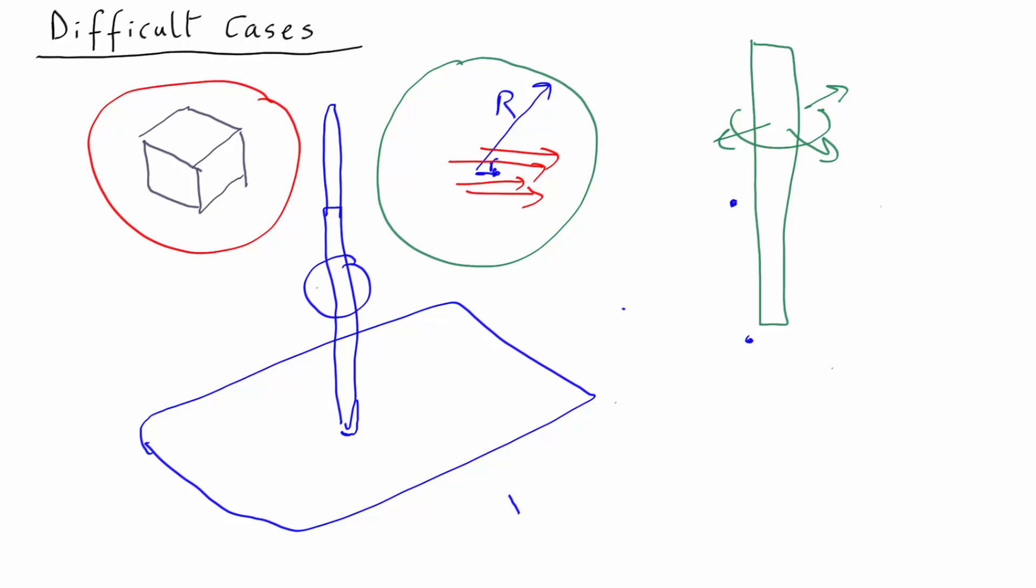So sometimes you can break a real complicated situation up into several simpler ones, solve them using Gauss's law, and then add them back together to get the final answer.